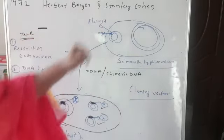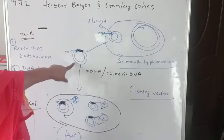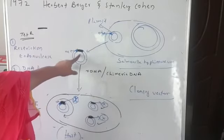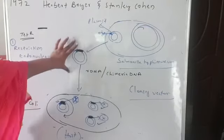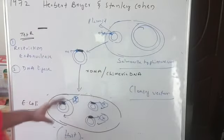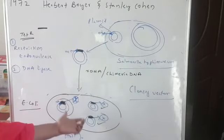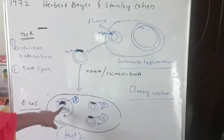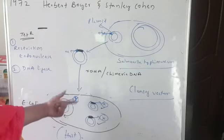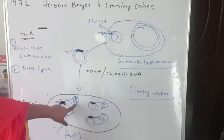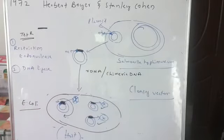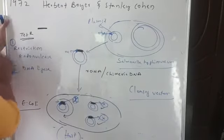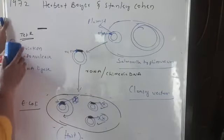This is how Herbert Boyer and Stanley Cohen constructed the first recombinant DNA, or chimeric DNA, which is a combination of plasmid DNA and the tetracycline resistance gene. They sent this R-DNA into the host, so multiple copies of the gene were obtained. The gene underwent expression in the bacterial cell to produce a protein which can detoxify tetracycline. This was the first R-DNA process done by Boyer and Cohen.